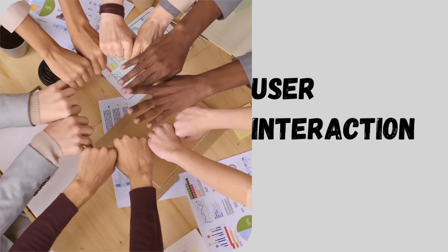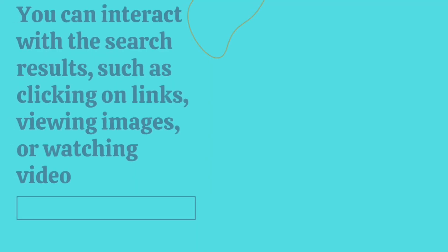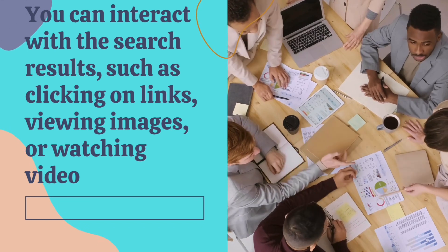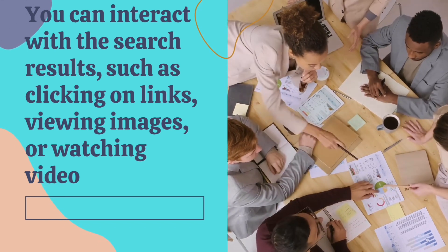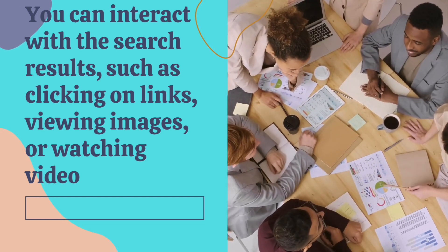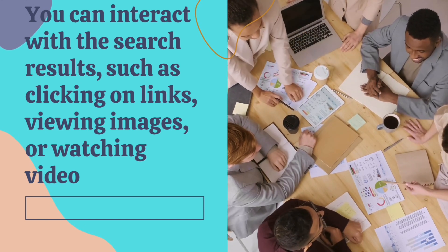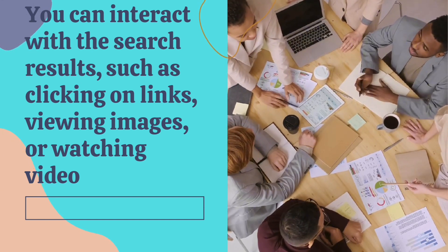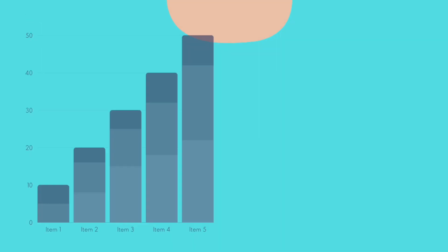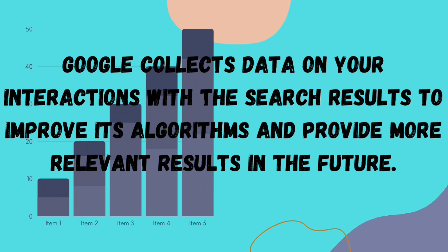User Interaction: You can interact with the search results, such as clicking on links and viewing images. Feedback Loop: Google collects data on your interaction with the search results to improve its algorithms and provide more relevant results in the future.